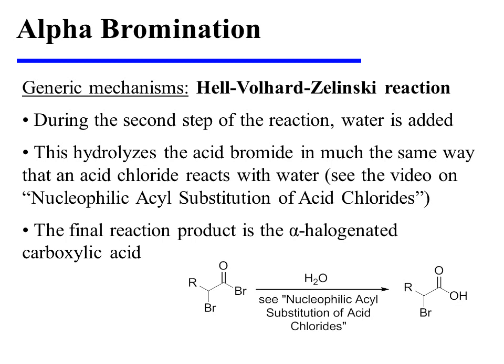During the second step of the reaction, water is added, and this hydrolyzes the acid bromide in much the same way that an acid chloride reacts with water. If you would like to see the complete mechanism for the process, refer to the video on the nucleophilic acyl substitution of acid chlorides. The final reaction product is the alpha-halogenated carboxylic acid.